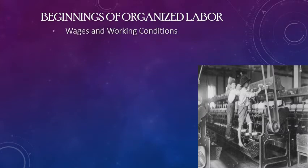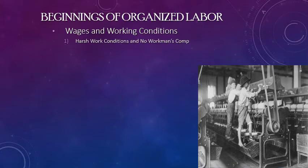Circumstances for workers in the 1870s are bad. More and more workers are working in factories, yet there are very few things protecting factory workers. Wages are low, working conditions are poor, there are no health benefits, and there's no workman's compensation.